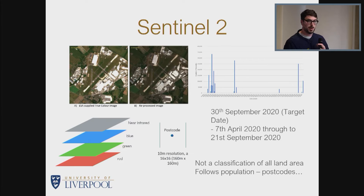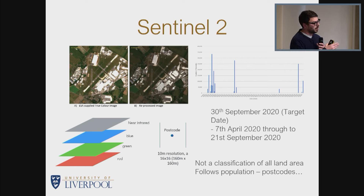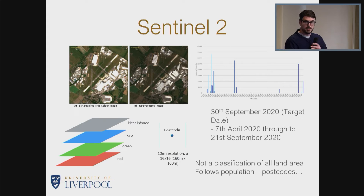This is a slightly different approach to any of those. We're using Sentinel-2 data, which has a 10-meter resolution, and we're looking at the red, green, blue bands and also the near-infrared band. The input data is configured so that around every postcode in the country we take a small area — a 16 by 16 grid — and from that we extract Sentinel-2 data for those locations.